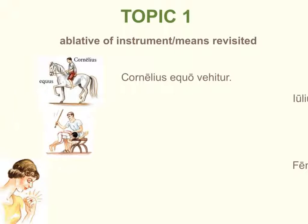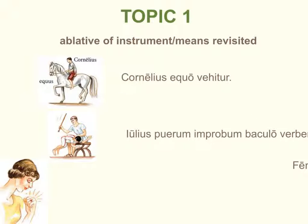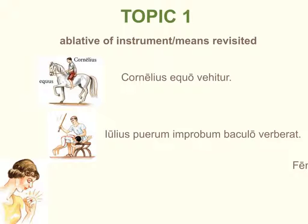Here's a familiar scene from chapter 3 where Marcus, puerim probus, gets in trouble. Iulius puerum improbum verberat — he beats Marcus with a particular instrument, with a baculum. So in Latin: Iulius puerum improbum baculo verberat, using again the ablative of instrument or means.